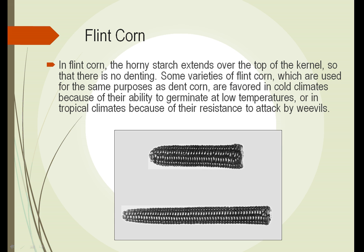In flint corn, the hard or horny starch from the side extends all the way over the top of the kernel, so even though the inside shrinks as it dries out, there will be no denting in the top. Flint corn has the ability to germinate at a lower temperature than dent corn, so in cold climates, flint corn becomes the preferred corn. It also becomes the preferred corn in tropical climates because it's more resistant to attack by an insect called a weevil. So in colder and hotter areas, flint corn; in temperate areas in the middle, dent corn.